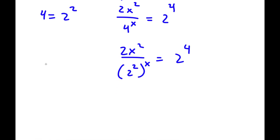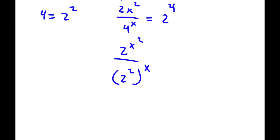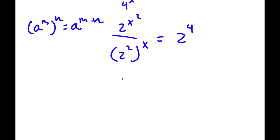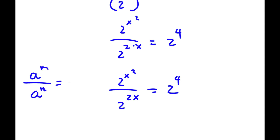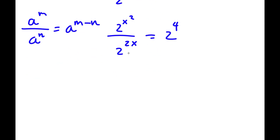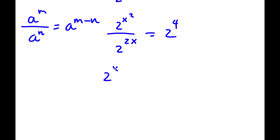Now applying the power-of-a-power rule — a to the power of m to the power of n equals a to the power of m times n — so 2 squared to the power of x equals 2 to the power of 2 times x, which is 2 to the power of 2x. So now I have 2 to the power of x squared over 2 to the power of 2x equals 2 to the power of 4. Now all my bases are 2, which makes this much easier to solve. Using the quotient rule — a to the power of m over a to the power of n equals a to the power of m minus n — I get 2 to the power of x squared minus 2x equals 2 to the power of 4.